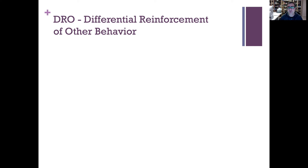Today we're going to be talking about differential reinforcement of other behavior, or DRO. The next lecture on Wednesday I'll be talking about differential reinforcement of low rates of behavior, and that will complete the chapter. We talked about DRA last class: identifying the reinforcer for the problem behavior, and then delivering that reinforcer.